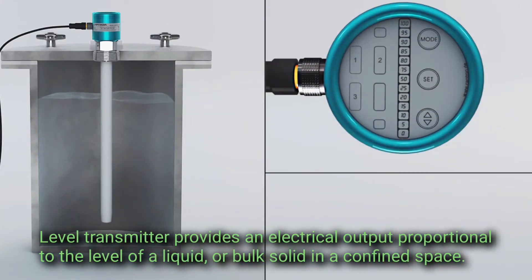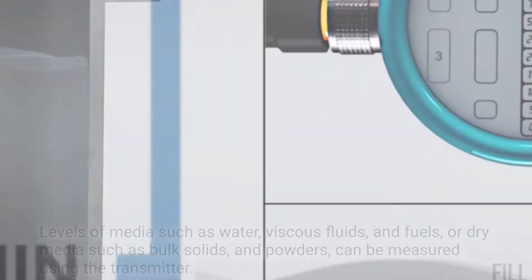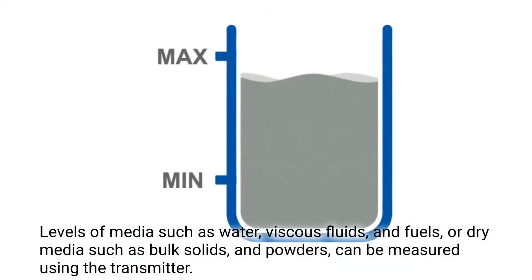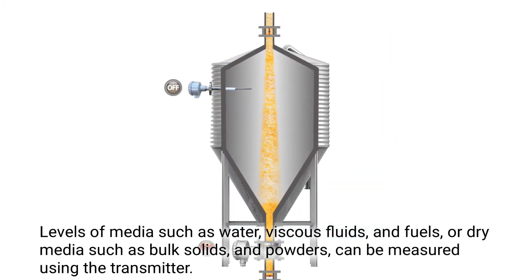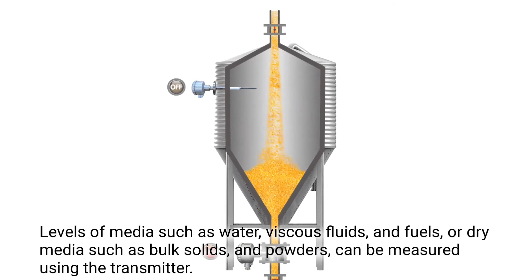Level Transmitters provide an electrical output proportional to the level of a liquid or bulk solid in a confined space. Levels of media such as water, viscous fluids, and fuels, or dry media such as bulk solids and powders can be measured using the transmitter.